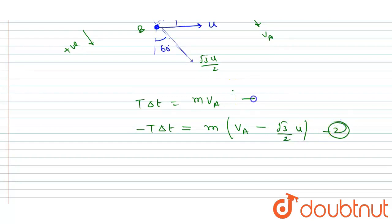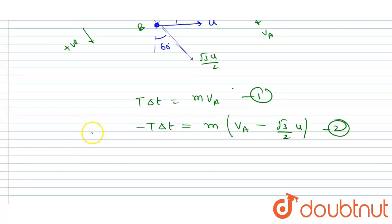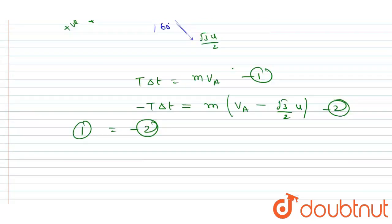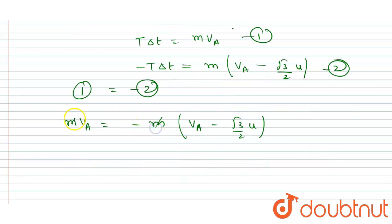Equation 2, equation 1. So I will write equation 1 equals negative of equation 2. So m va minus root 3 by 2, this m will get cancelled out and you will get 2 va equals